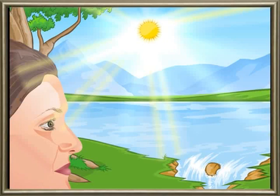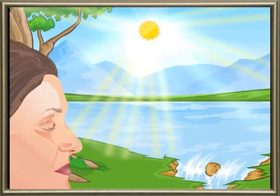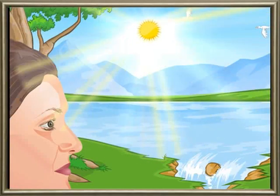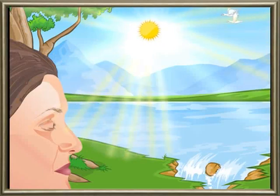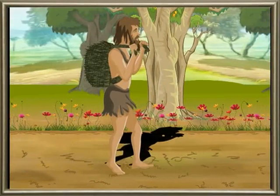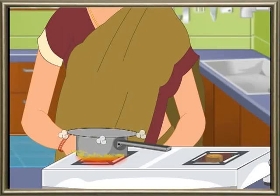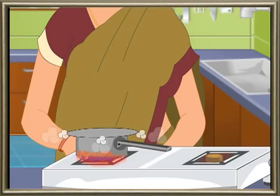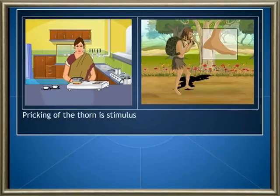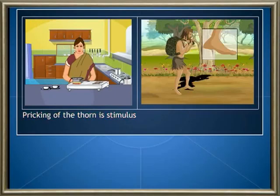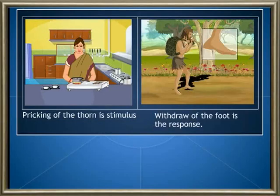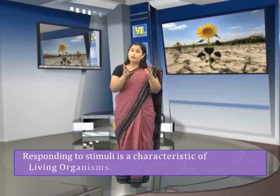Organisms respond to external stimuli. When strong light rays fall on our eyes, we close or blink our eyes. When a thorn pricks our foot, we immediately withdraw our leg. When we touch a hot vessel, we immediately withdraw our hand. Pricking of the thorn is the stimulus and withdrawal of the foot is the response. Withdrawal of the hand is also a response to stimulus. Responding to stimuli is a characteristic of living organisms.